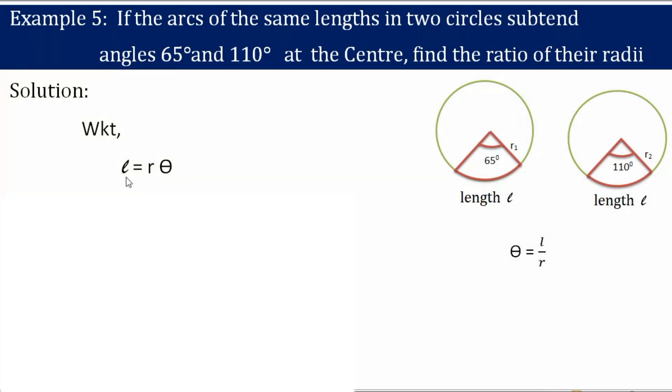In this case, length of the two arcs is same. So for circle 1, L is equal to R1 times theta 1, and for circle 2, L will be equal to R2 times theta 2.